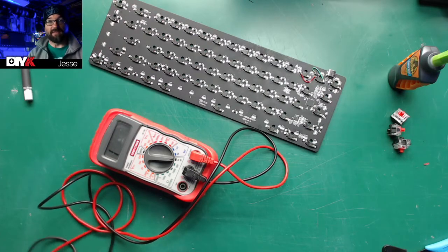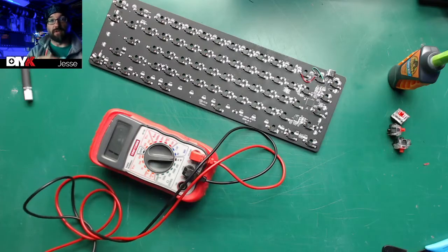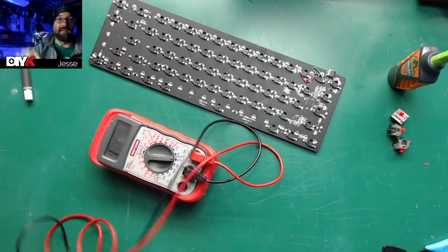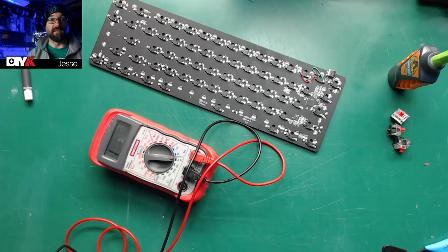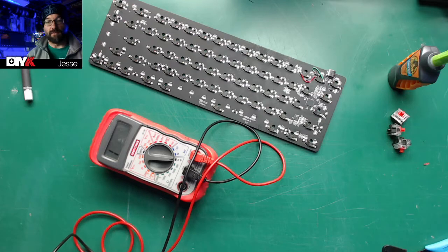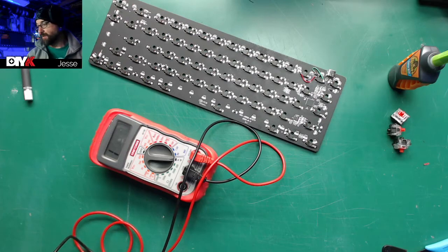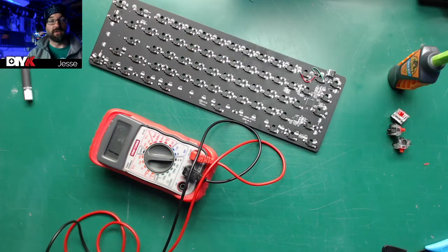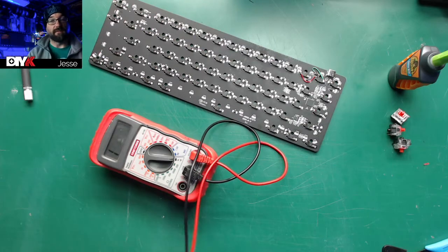Diodes are essentially a one-way electrical gate that keeps the electricity from flowing backwards through the circuit. Once it passes out of the switch through the diode, it can't go back in, and that prevents ghosting. When you press keys they can't flow backwards through the network and cause problems. So all we need to do is connect our output side from the switch to the input side of the diode and we're good to go.